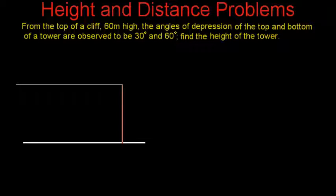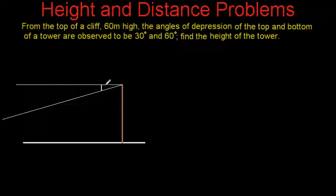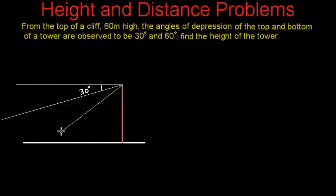The angle of depression of the top of the tower is 30 degrees. That means if I draw a line 30 degrees from this horizontal line, the top of the tower will lie somewhere on this line. The angle of depression to the bottom of the tower is 60 degrees, so if I draw a line at 60 degrees, we get to know that the base of the tower lies on that point. This means we can draw the tower here — this is the bottom and this will be the top of the tower.